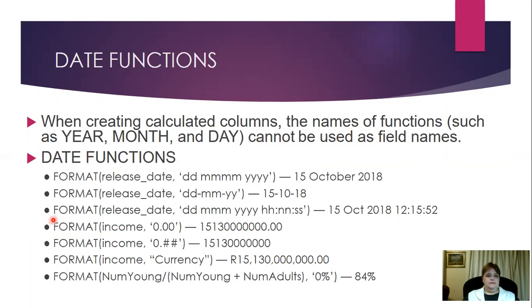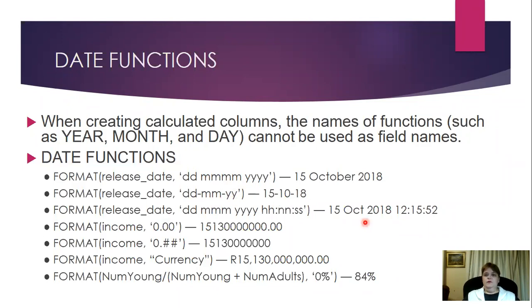Let's recap how to write the different types of date functions. If I would like to display 15 October 2018, I would write FORMAT, then my field name, then 'dd mmmm' — if there are four M's, it tells any programming language to write out the entire month name — then 'yyyy' for the full year. For a more digital-style date I would use 'dd/mmm/yyyy'. If I wanted the date with the time, I would say 'dd mmm' — only three letters for the month — then full year.